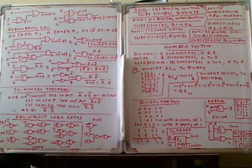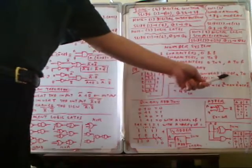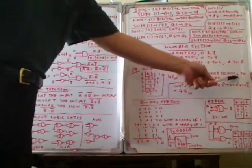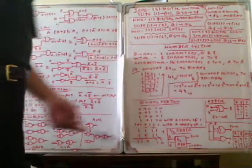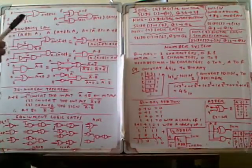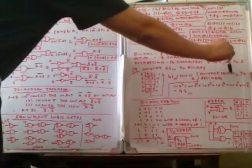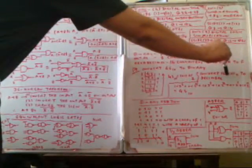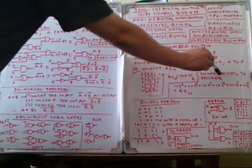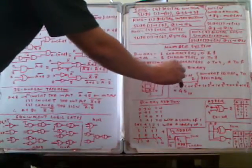Now we go back and convert 101101 from binary to decimal. Each digit has a place value: the rightmost is place zero, then place one, place two, place three, place four, and place five on the left.